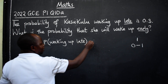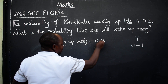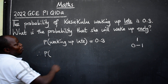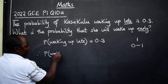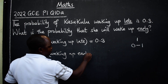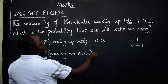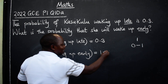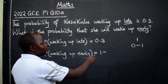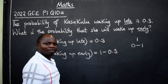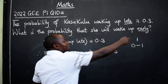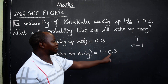The probability of waking up late is 0.3. Therefore, the probability of waking up early will be equal to 1 minus the probability of waking up late. So it will be 1 minus 0.3. When we add them, we should get 1, so now we subtract here.